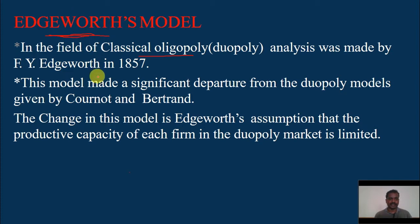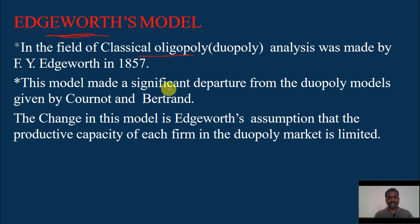F.Y. Edgeworth in 1857 is a French economist who also attacked Cournot's Duopoly solution. He criticizes Cournot's assumption that each duopolist believes his rival will continue to produce the same output irrespective of what he himself might produce. This model made a significant departure from the duopoly model given by Cournot and Bertrand.